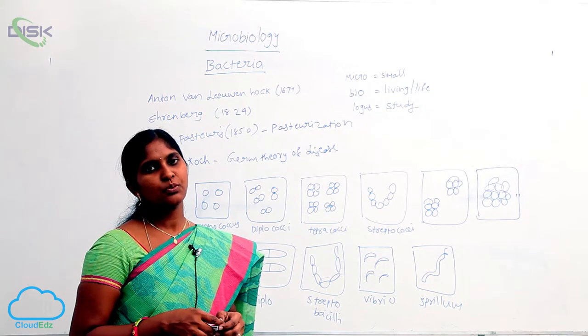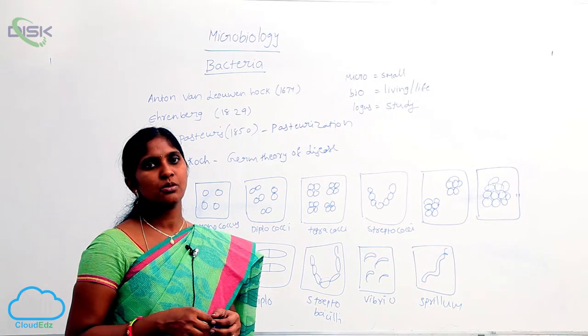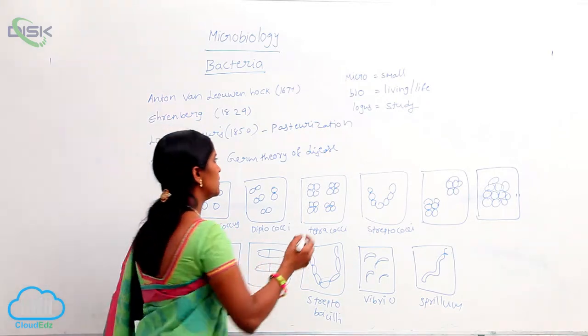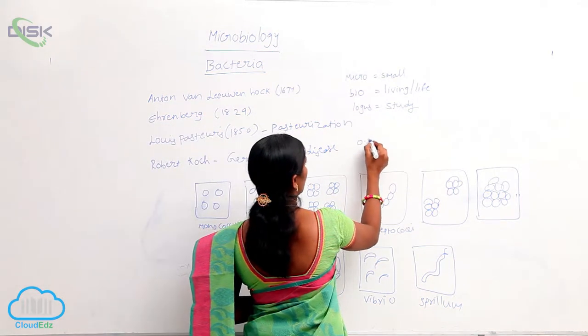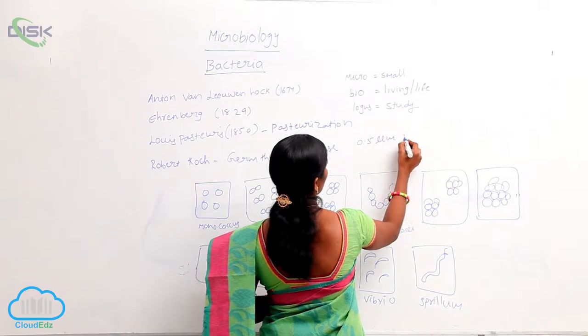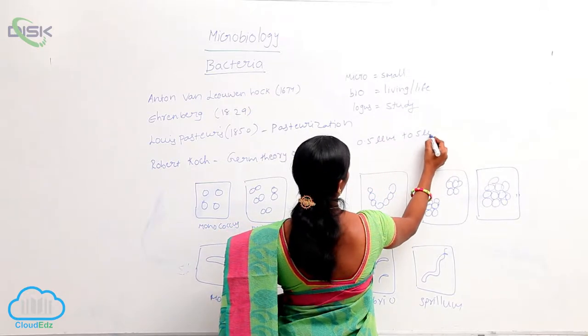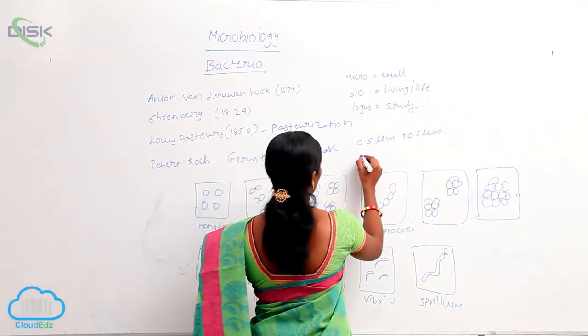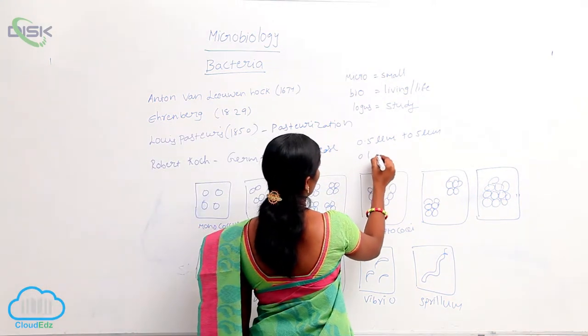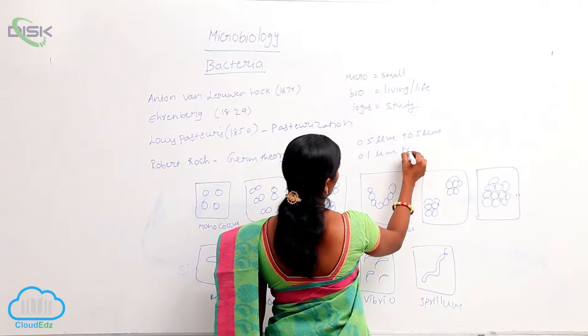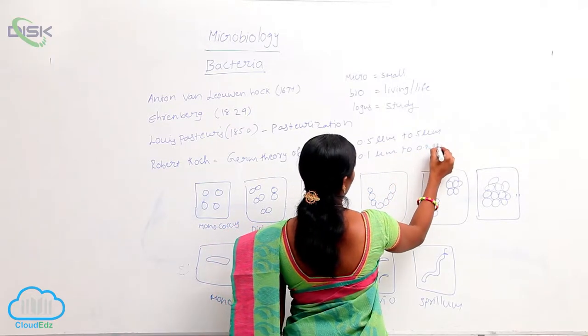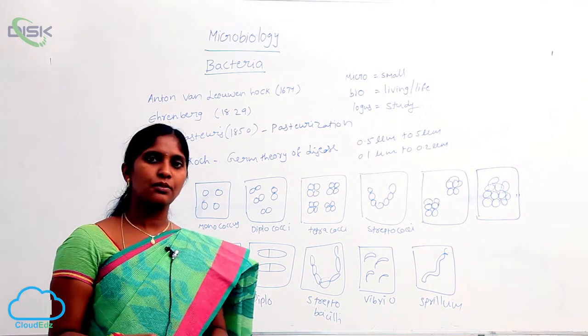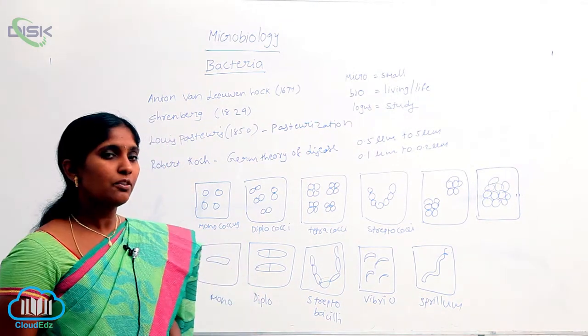The size of bacteria varies from one species to another, generally ranging from 0.5 to 5 micrometers in length, while the breadth is 0.1 to 0.2 micrometers.